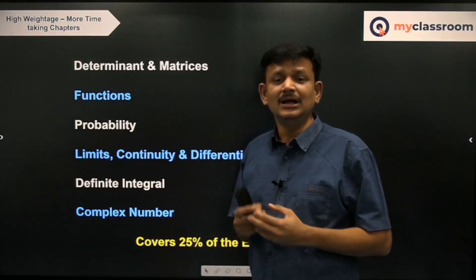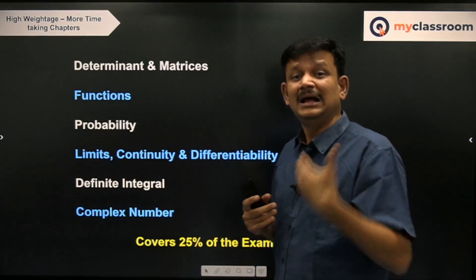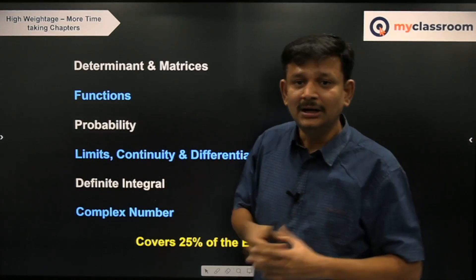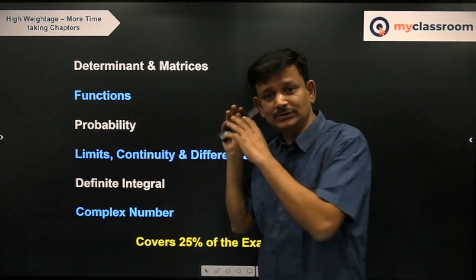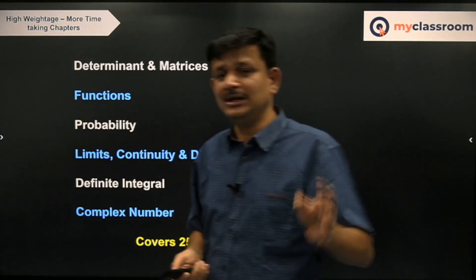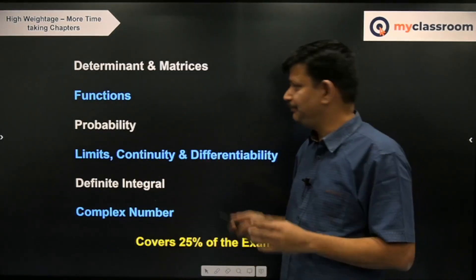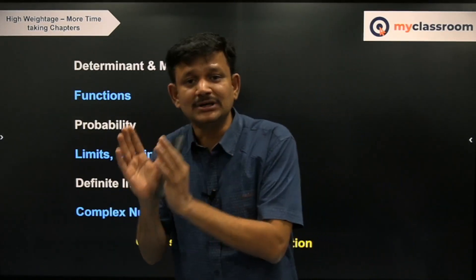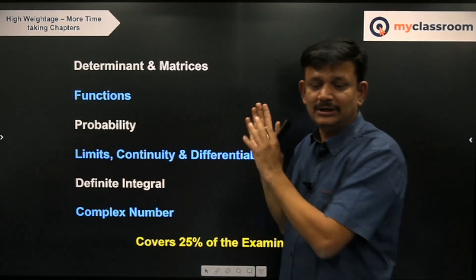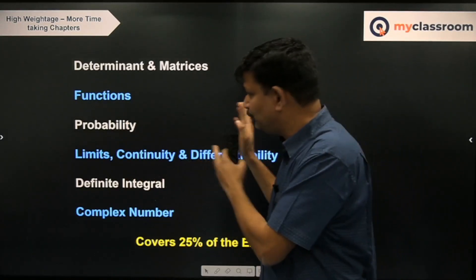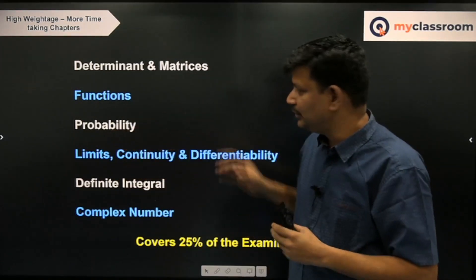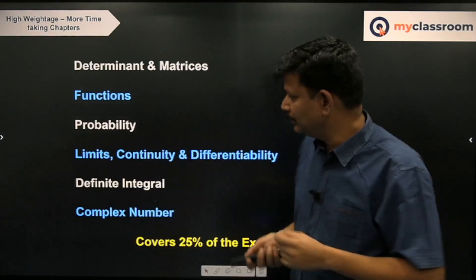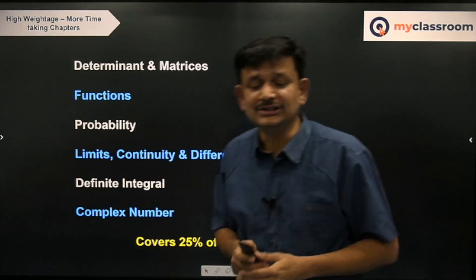Functions — know periodicity, even/odd nature, domain, and calculation of range of a function. Do as many questions as possible — roughly 10 to 15 questions on finding range and domain each. Probability — major focus should be on the classical definition of probability, then conditional probability, total probability theorem, and Bayes' theorem. These 4 concepts will complete your probability chapter. Before doing probability, be thorough with permutations and combinations.